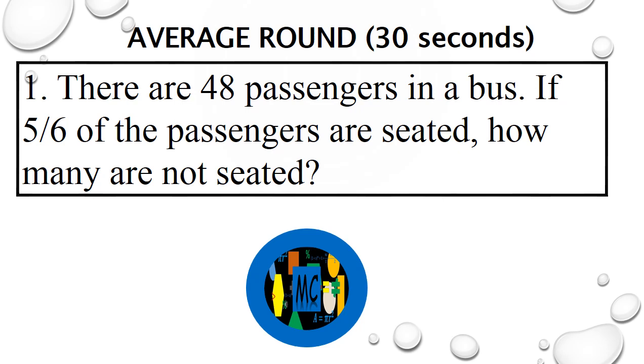Question 1. There are 48 passengers in a bus. If 5 sixths of the passengers are seated, how many are not seated?